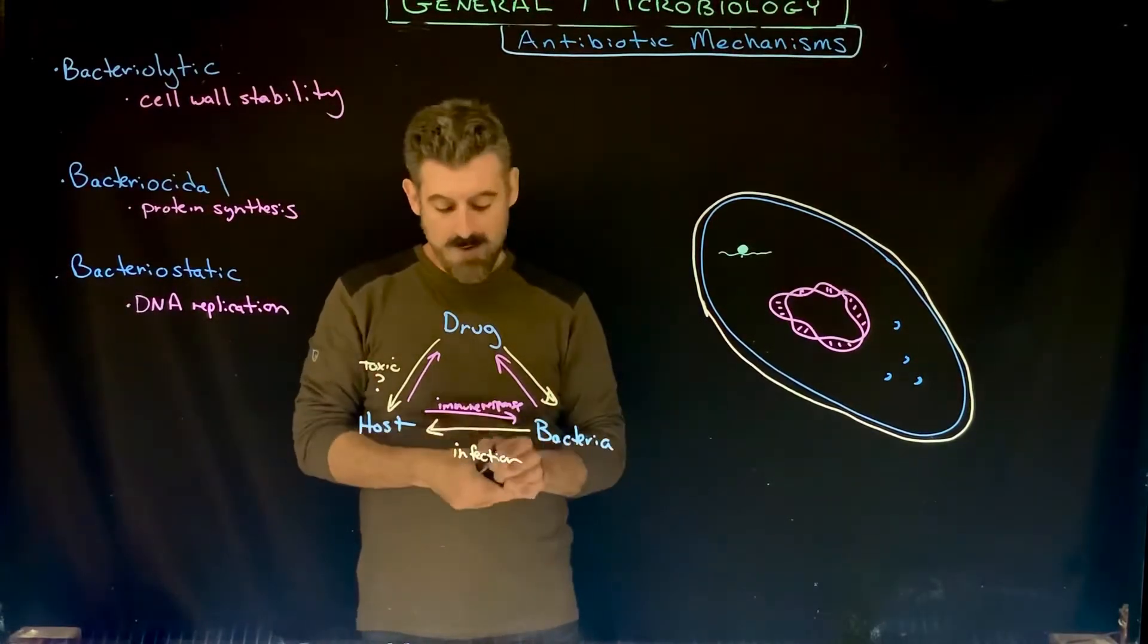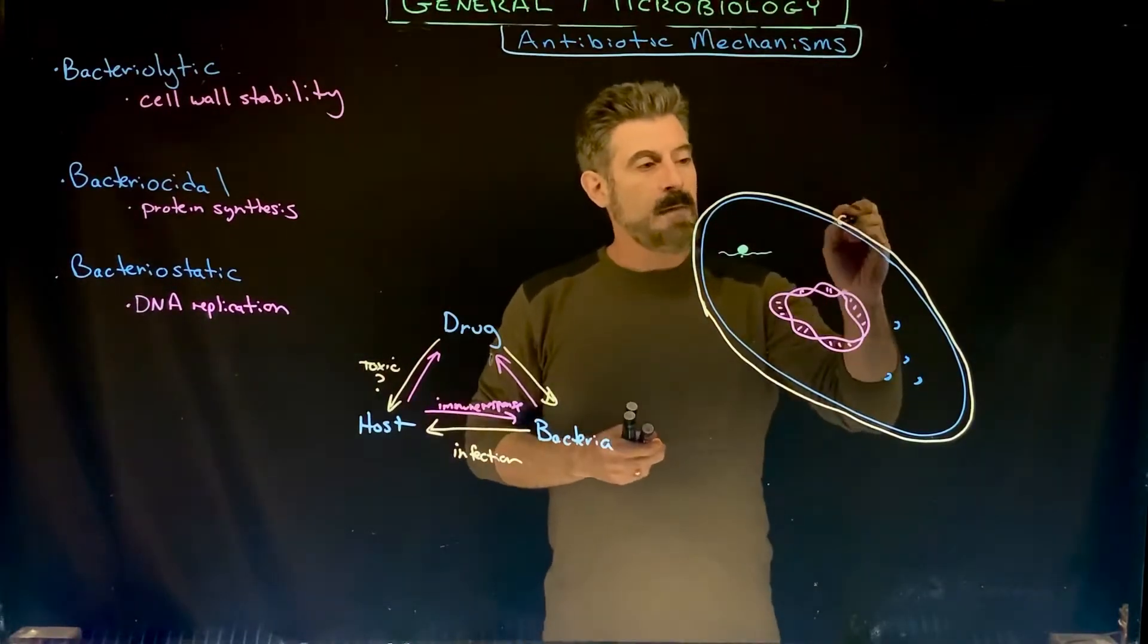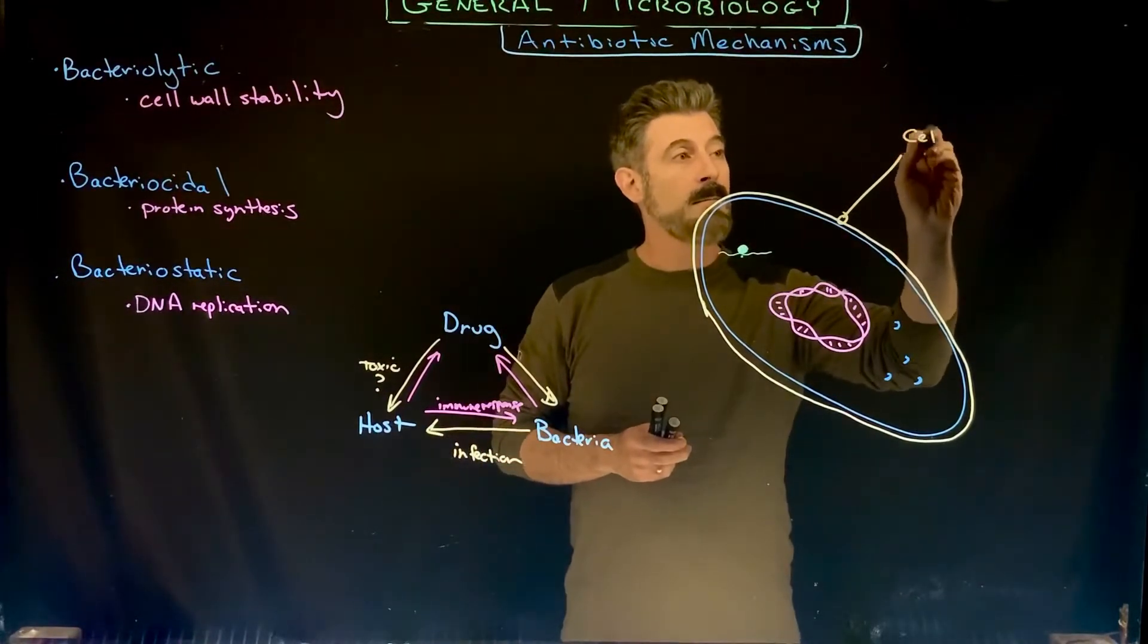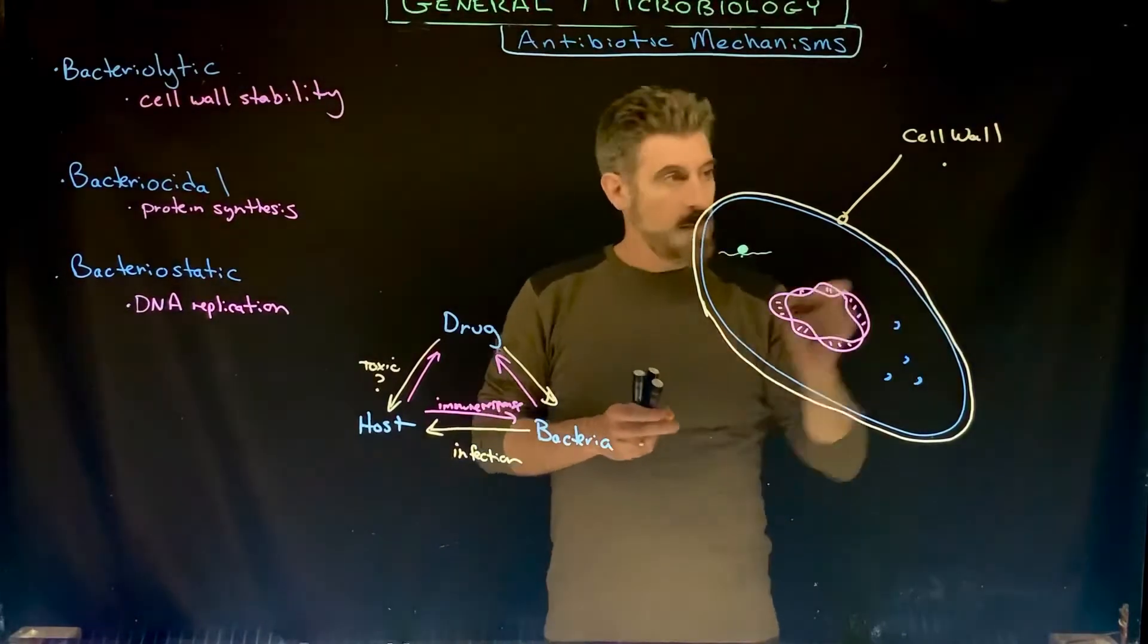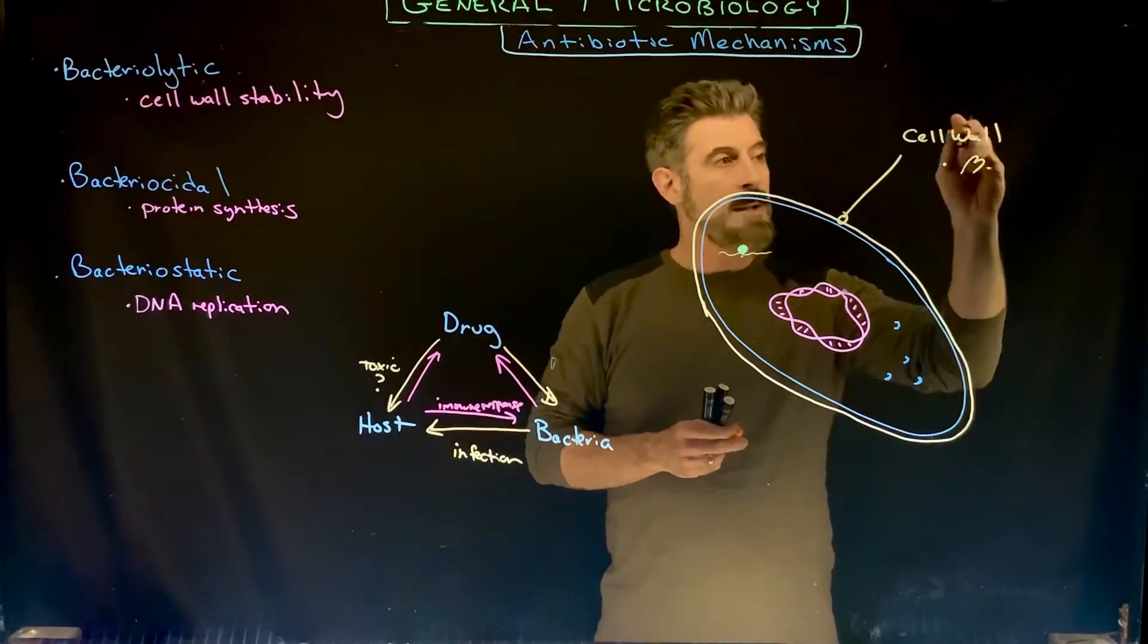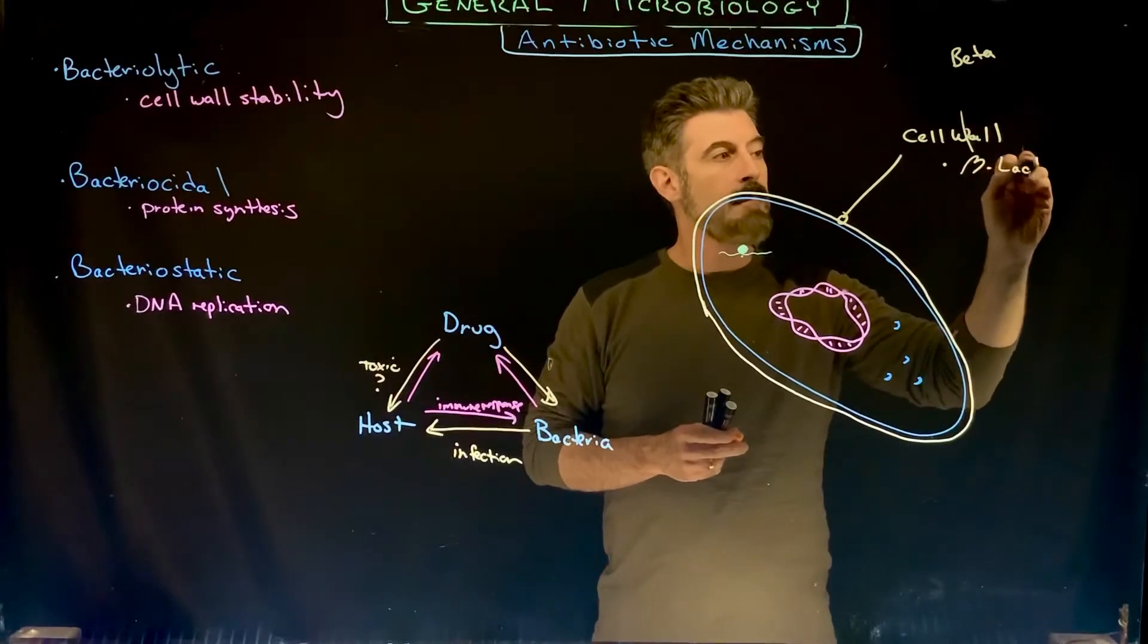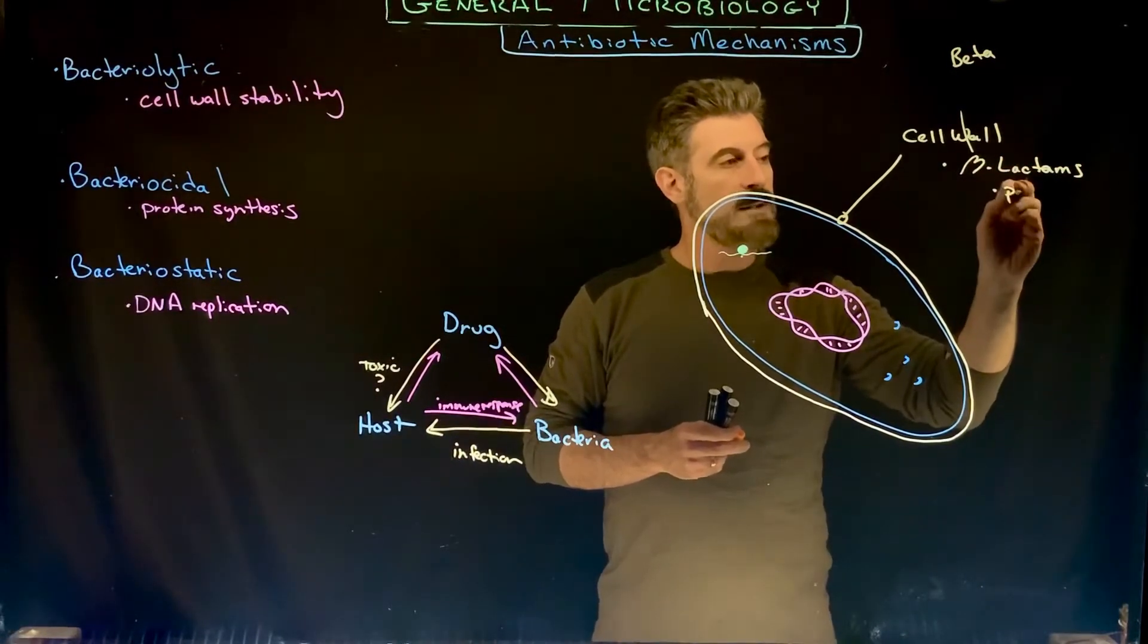Let's talk specifically about some of the different mechanisms and classes. We're going to have some groups of antibiotics that work specifically on the cell wall. One of those groups are the beta-lactams. Belonging to this group, for example, is penicillin.